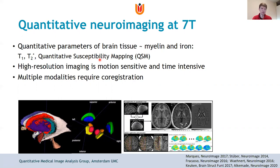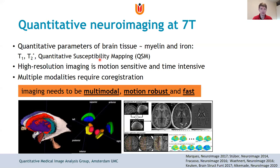What we know is that high resolution imaging is motion sensitive and also time intensive — it's lengthy. After acquiring the data in the conventional setting, it requires post-processing through co-registration and other steps which might compromise the resolution obtained. This brings us to the main message of this presentation: we are seeking imaging that is multimodal, motion robust, and fast, to move forward for in vivo imaging in the subcortex.